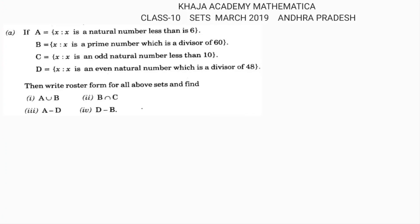This question is from a March 2019 Andhra Pradesh max paper, plus 10. Set A is defined as x such that x is a natural number less than 6. So the elements in set A are natural numbers less than 6: 1, 2, 3, 4, 5.